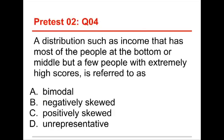Number four. A distribution, such as income, that has most of the people at the bottom or middle, but a few people with extremely high scores, is referred to as what? Bimodal, negatively skewed, positively skewed, or unrepresentative. Well, the answer to this one is positively skewed.